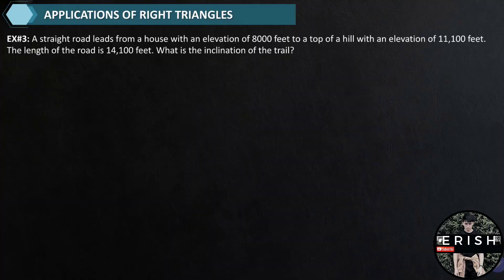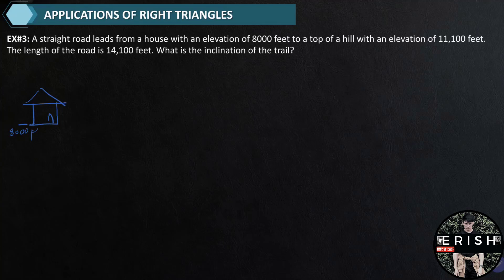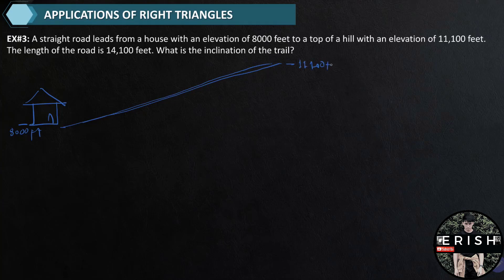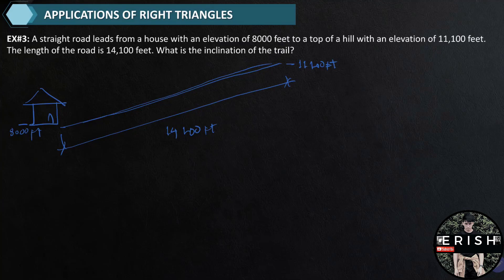Example 3 is a word problem. A straight road leads from a house with an elevation of 8,000 feet to the top of a hill with an elevation of 11,100 feet. Since we have no figure, we visualize. The house has an elevation of 8,000 feet; the top of the hill has an elevation of 11,100 feet. The length of the road is given as 14,100 feet. The question is: what is the inclination of the hill — that is, the angle of incline?